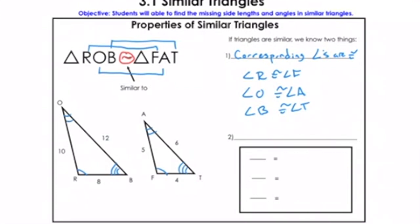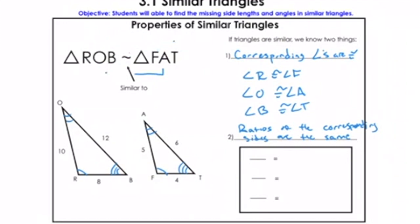The second big fact we need to know is that the ratios of the corresponding sides are the same. So what I mean by that is: the ratio of RO to FA. RO is right here, FA right here — that ratio is 10 to 5, which reduces to 2. It's going to be the same as all the other ratios of the corresponding sides. So OB to AT: here's OB, here's AT. That ratio is 12 to 6, which is also 2.